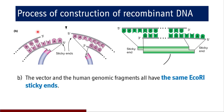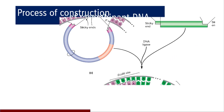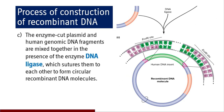The vector and the human genomic fragments all have the same ECO-R1 sticky ends. This vector cut after action of the restriction enzyme and the fragments from the human genomic sequences share the same sticky end because the same enzyme cut both. In the next step, the enzyme-cut plasmid and the human genomic DNA fragments are mixed together in the presence of DNA ligase, which will suture them to each other to form circular recombinant DNA molecules. Restriction fragments from human genomic DNA are sutured with plasmid DNA to form the circular recombinant DNA molecule.